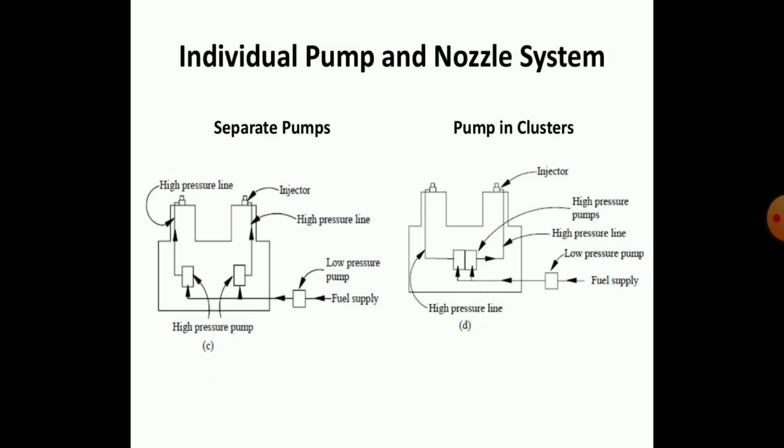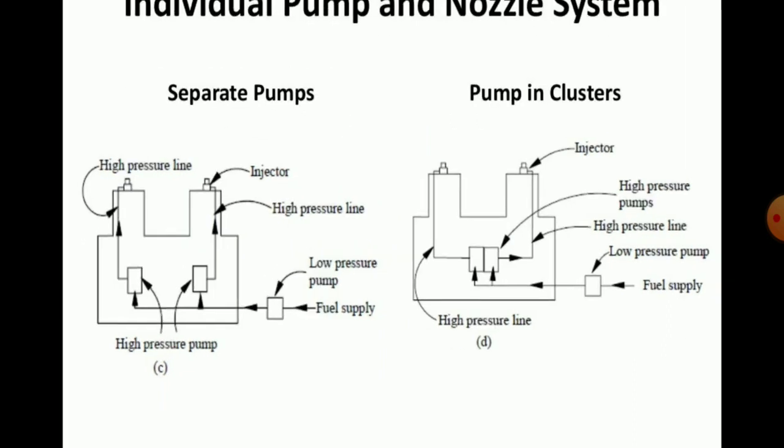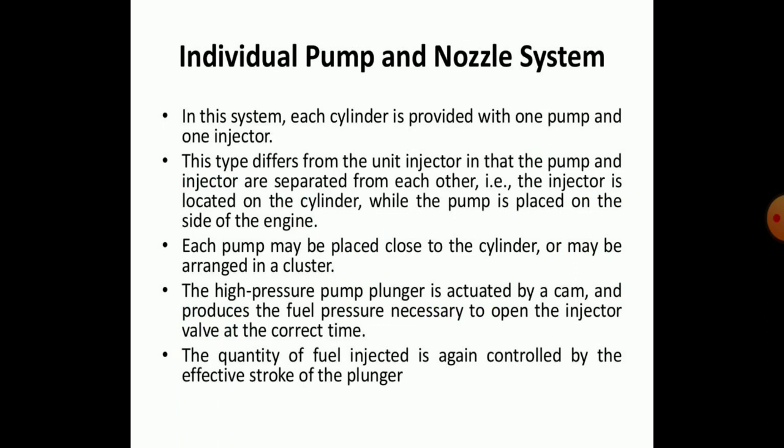In the individual pump and nozzle system, separated pumps and pump clusters are used, with high pressure lines and high pressure pumps provided for each cylinder. Each cylinder is provided with one pump and one injector. This type differs from the unit injector in that the pump and injector are separated — the injector is located on the cylinder while the pump is placed on the side of the engine. Each pump may be placed close to the cylinder or arranged in a cluster. The high pressure pump plunger is activated by an arm and produces the fuel pressure necessary to open the injector valve at the correct timing. The quantity of fuel injected is controlled by the effective stroke of the plunger.